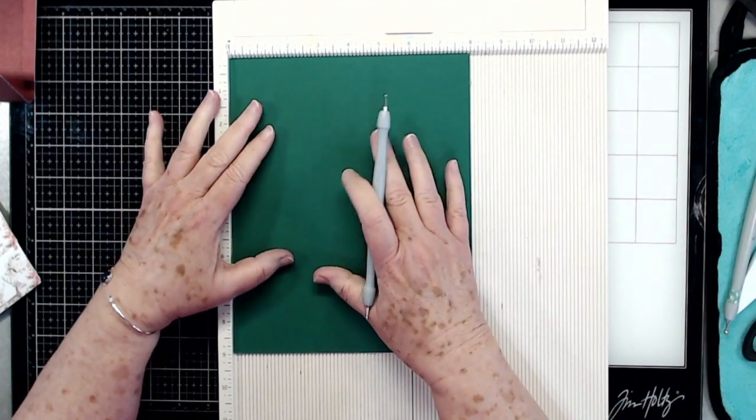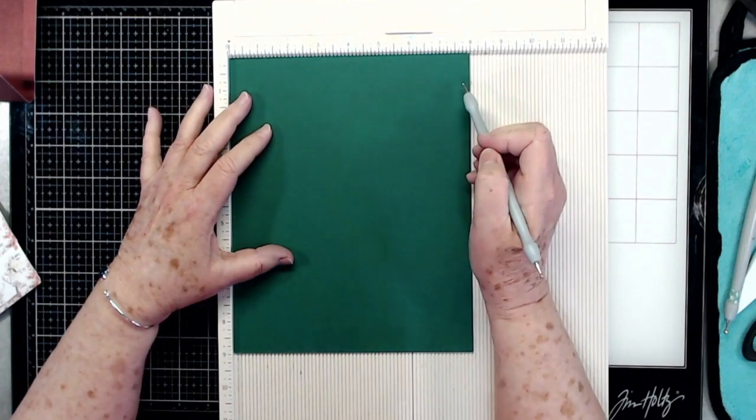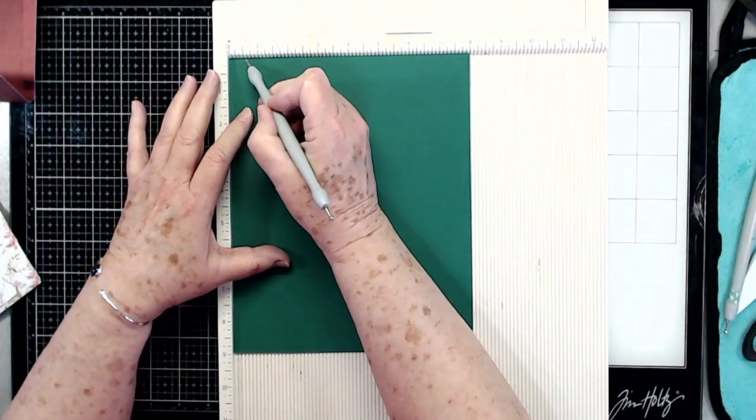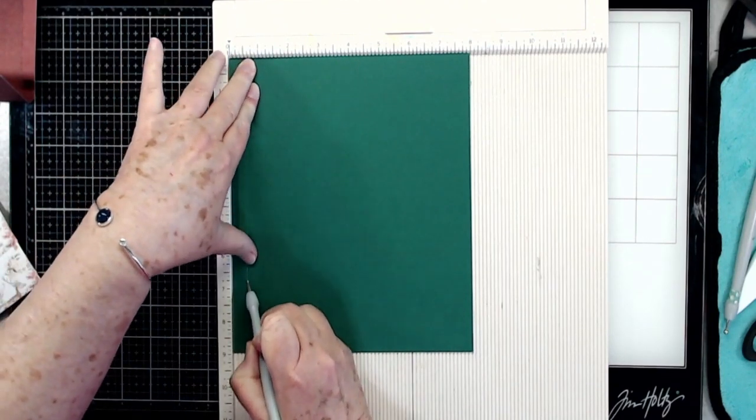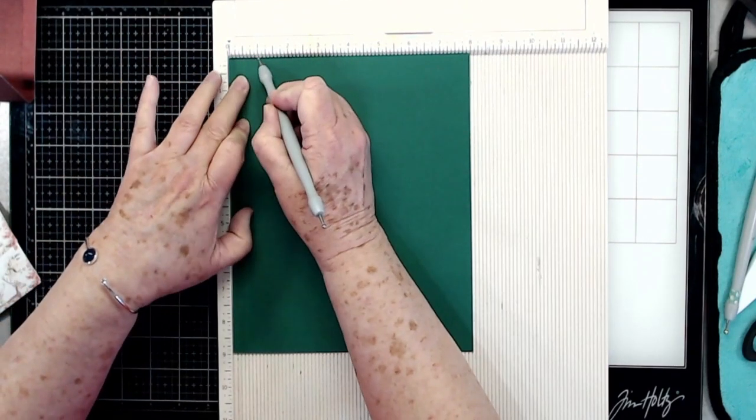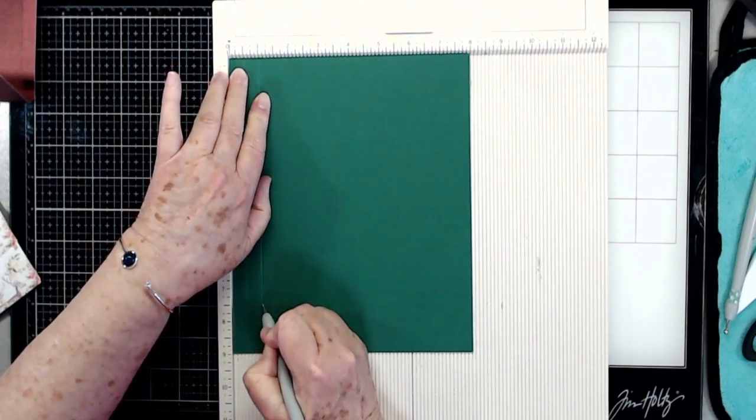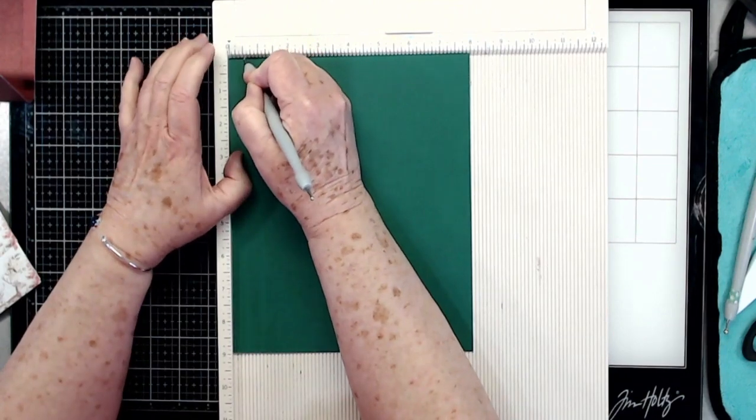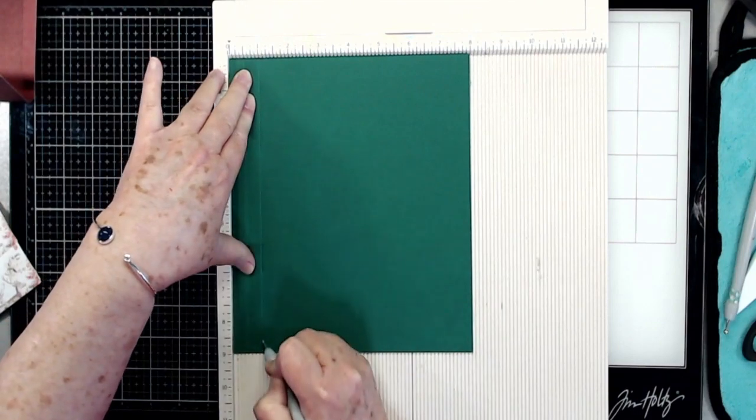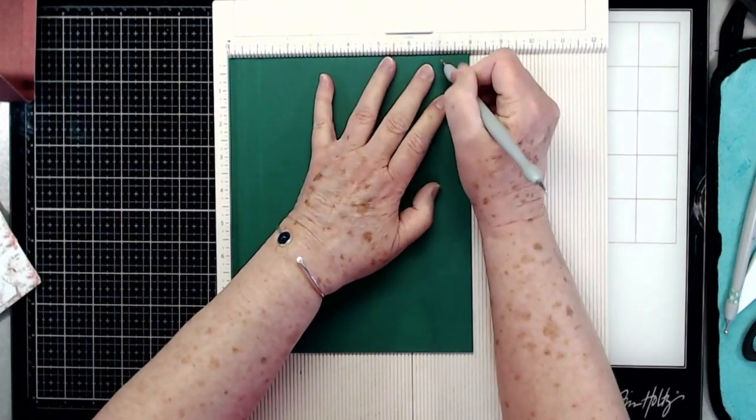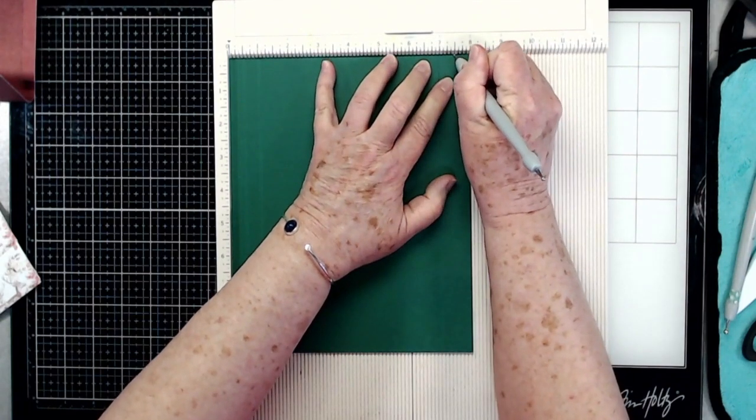You're going to start off with a piece of cardstock that is 8 inches by 9 inches. On the 8-inch side, you're going to score at one half and at one. Then you're going to score at seven and at seven and a half.